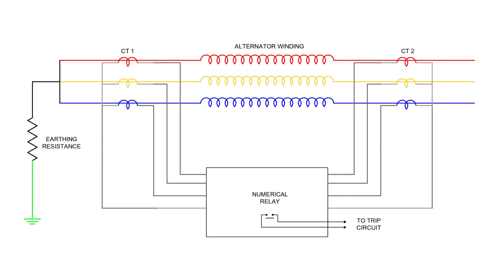Although the example we've just discussed uses electromagnetic relays, in modern power systems, we typically use numerical relays for protection. In these systems, the secondary outputs from the current transformers, CT1 and CT2, are fed directly into the relay. This relay continuously monitors the incoming current values from both ends of the alternator winding.